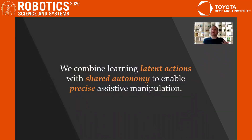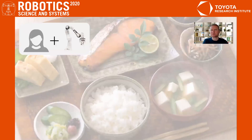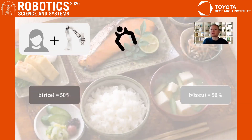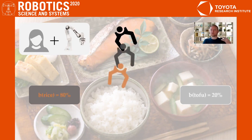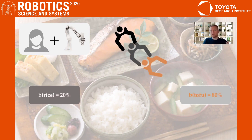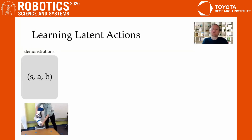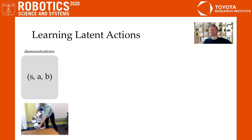In this paper, we combine our latent action approach with shared autonomy in order to enable precise assistive manipulation. Let's say you're trying to eat dinner and you control an assistive robot arm. The robot has a belief over the different goals on the plate. This belief captures the robot's confidence in which high-level goal you want to reach. As you start moving towards the rice, the robot updates its belief, and moving towards the tofu causes the robot to become confident that what you really wanted was that tofu.